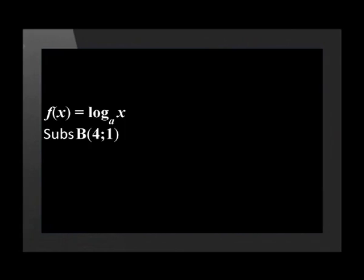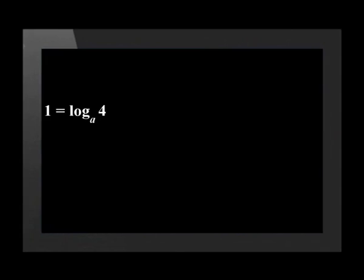Substituting using point b, we get 1 = log_a(4). Let us use the exponents to solve for a. 1 = log_a(4) becomes a^1 = 4. Therefore, a = 4.